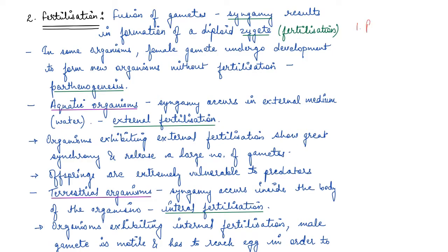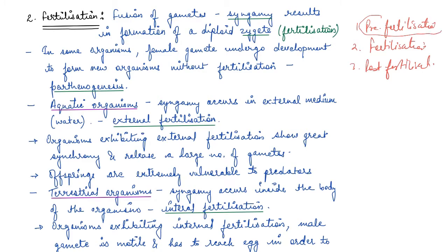The first one is pre-fertilization, the second one is fertilization, and the third one is post-fertilization. So we covered in pre-fertilization how the gametes are formed, what is gametogenesis, and how they are transferred. Now once the gametes are transferred, we come across the second event which is fertilization.